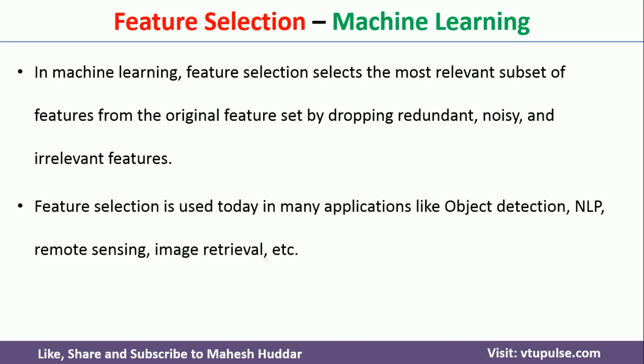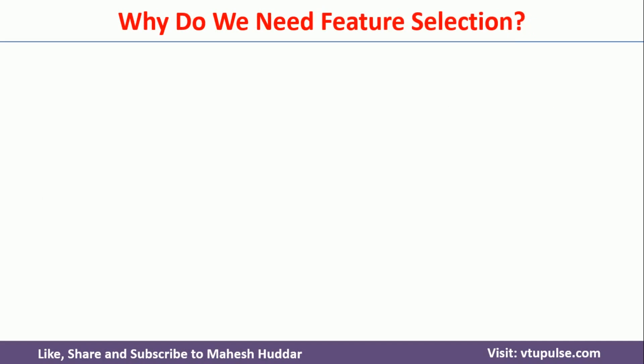Feature selection is used in many applications like object detection, natural language processing, remote sensing, image retrieval, and so on.